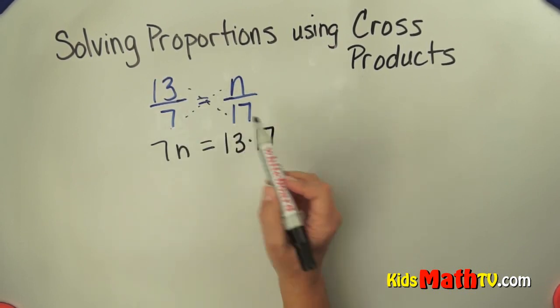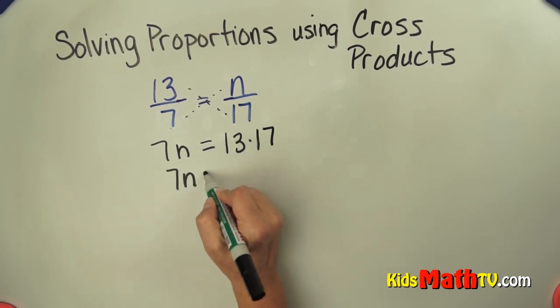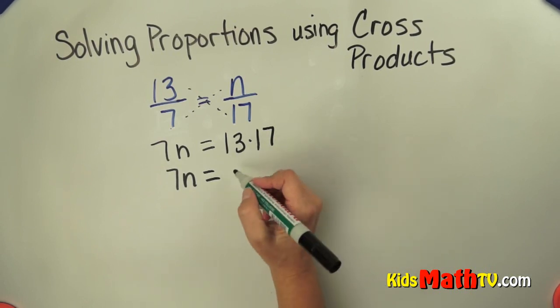7 times n equals 13 times 17. I'm going to simplify this side first. I'll leave 7n equals 13 times 17. 13 times 17 is 221.